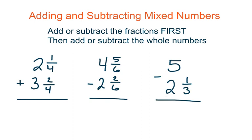When we add and subtract mixed numbers, the first thing we're going to do is add and subtract the fractions — we always do that first. Then we add and subtract the whole numbers. The reason we do fractions first is because sometimes we'll have to do some regrouping or renaming with our fractions. Other times there might not be a fraction in that area and we'll have to create one by borrowing from a whole.